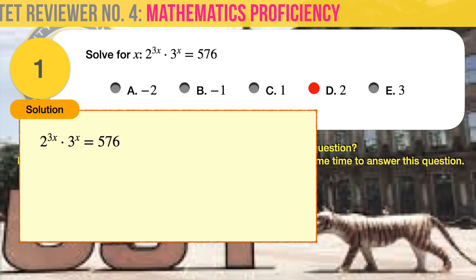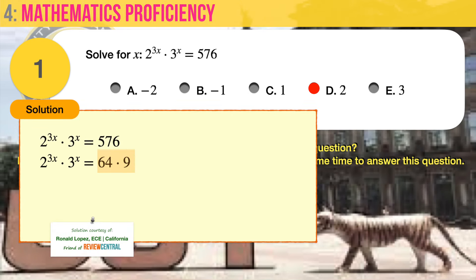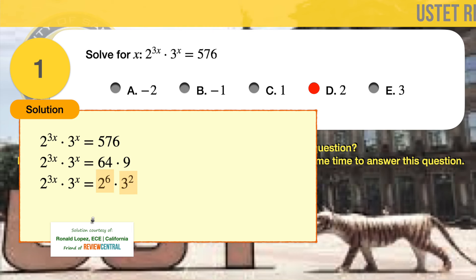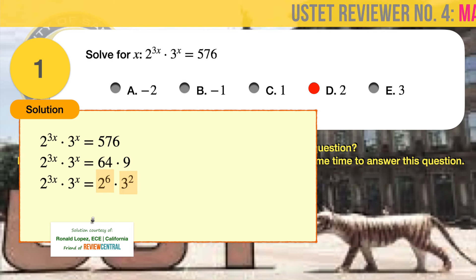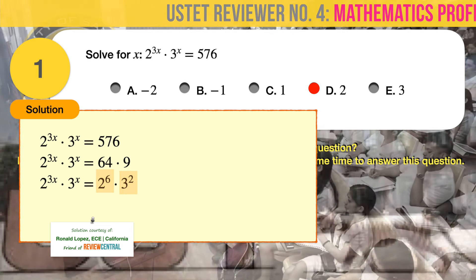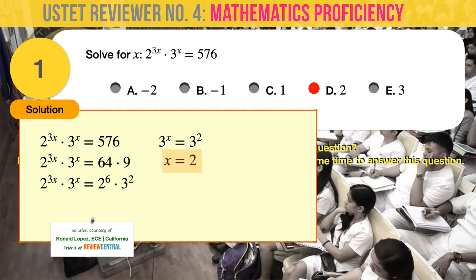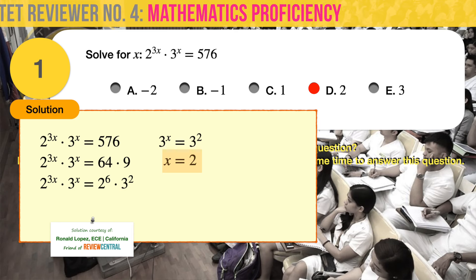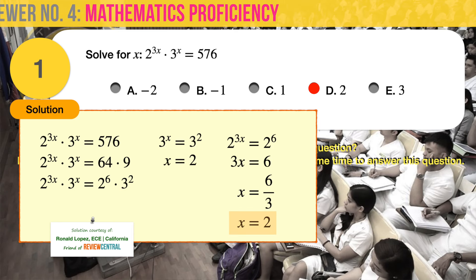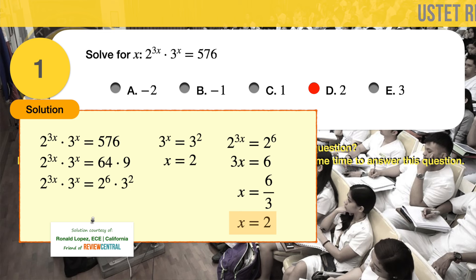Now let's solve the given problem. Step 1: express 576 as 64 times 9. Step 2: express 64 as 2 raised to 6, and 9 as 3 raised to 2. Both sides now have common bases. Equate terms with common bases: 3 raised to x equals 3 raised to 2, therefore x equals 2. Also, 2 raised to 3x equals 2 raised to 6, therefore 3x equals 6 and x equals 2.